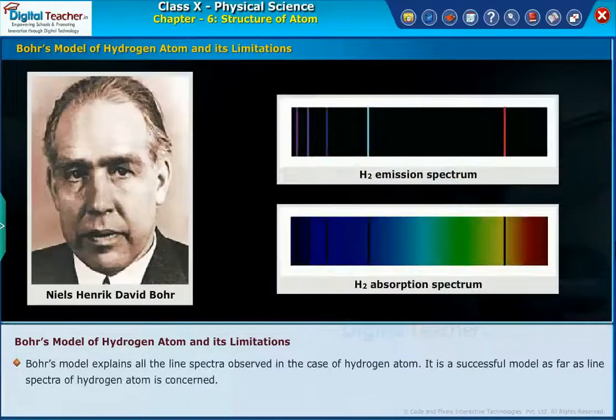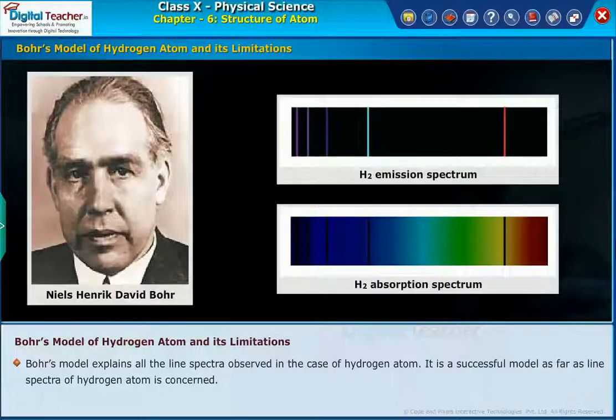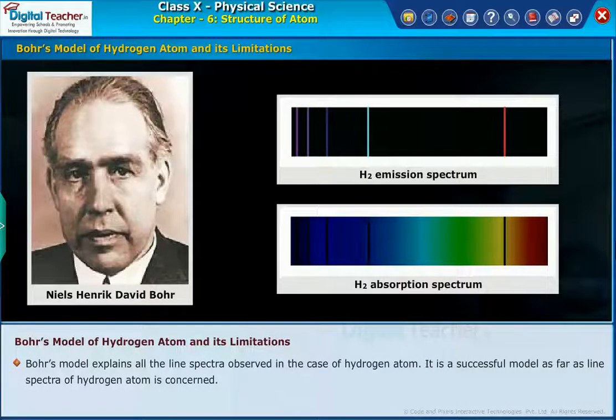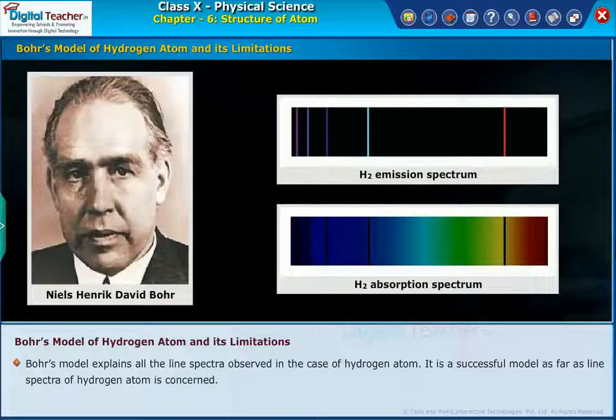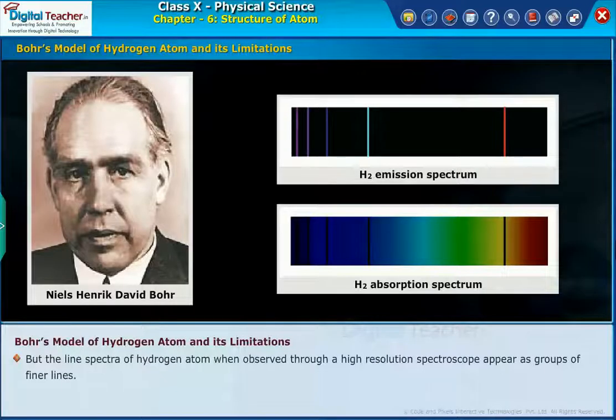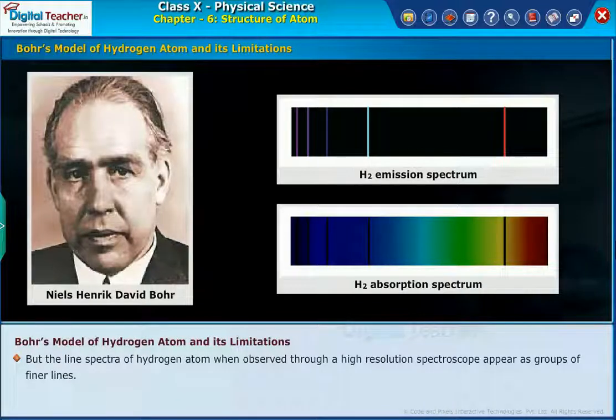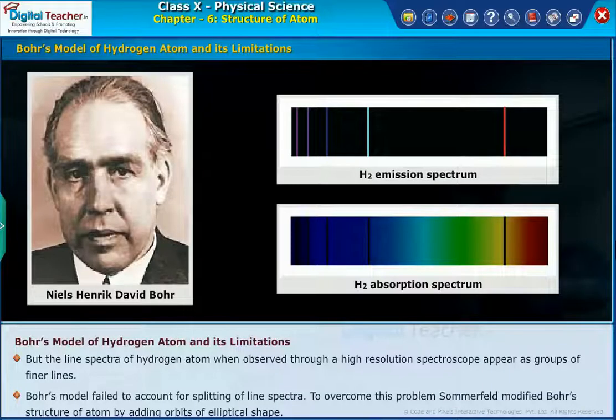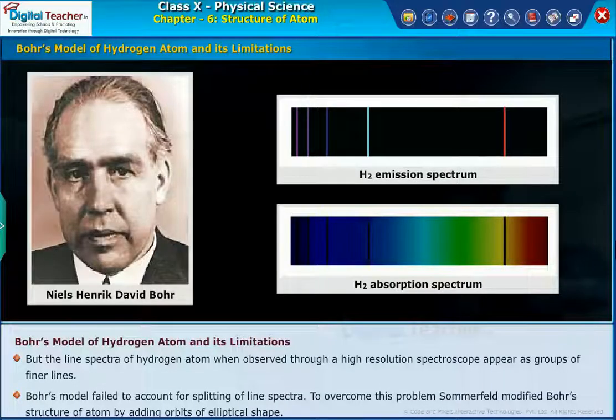Bohr's model explains all the line spectra observed in the case of hydrogen atom. It is a successful model as far as line spectra of hydrogen atom is concerned. But the line spectra of hydrogen atom when observed through a high resolution spectroscope appear as groups of finer lines. Bohr's model failed to account for splitting of line spectra.